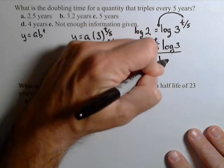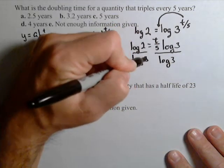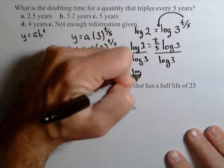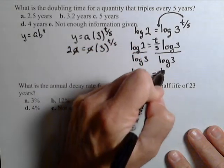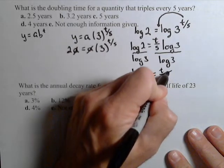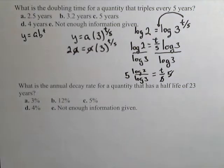So I'll divide both sides by log three, and I have log of two over log of three equals t over five. Then multiply both sides by five, and I've solved exactly for t.